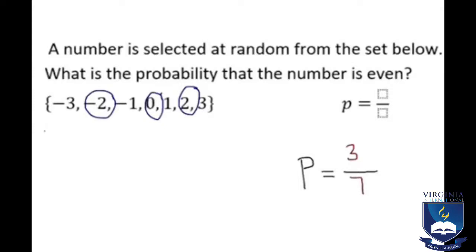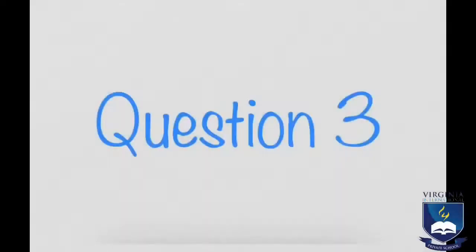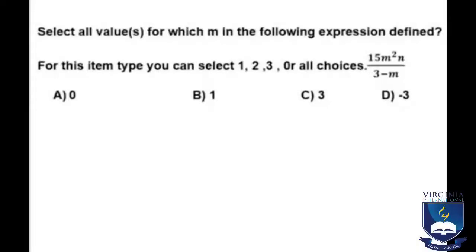This is our final answer, P = 3/7. So the summary: to find the probability that the number is even, what you need to do is count how many numbers are even divided by the total number.